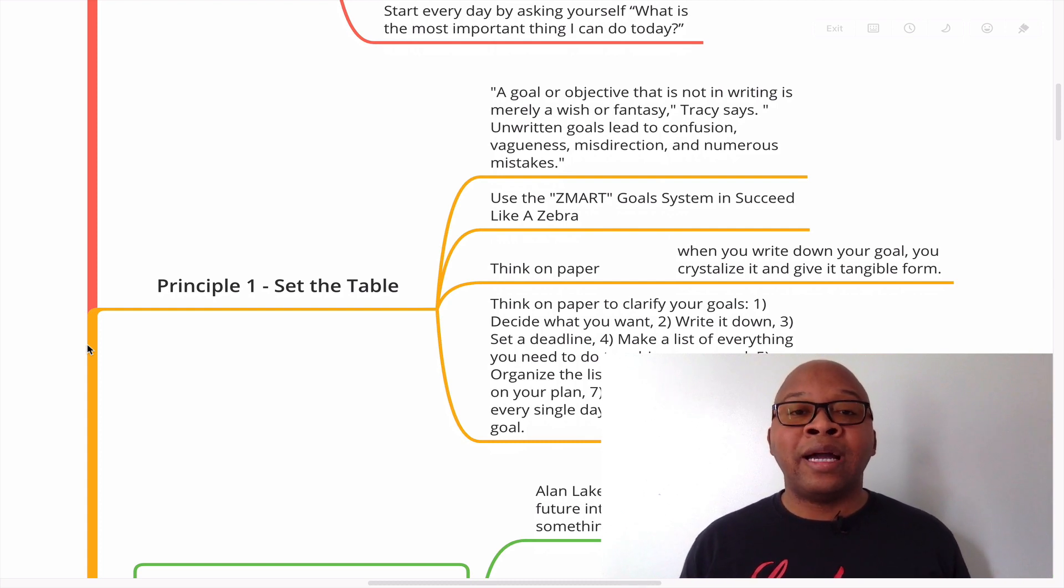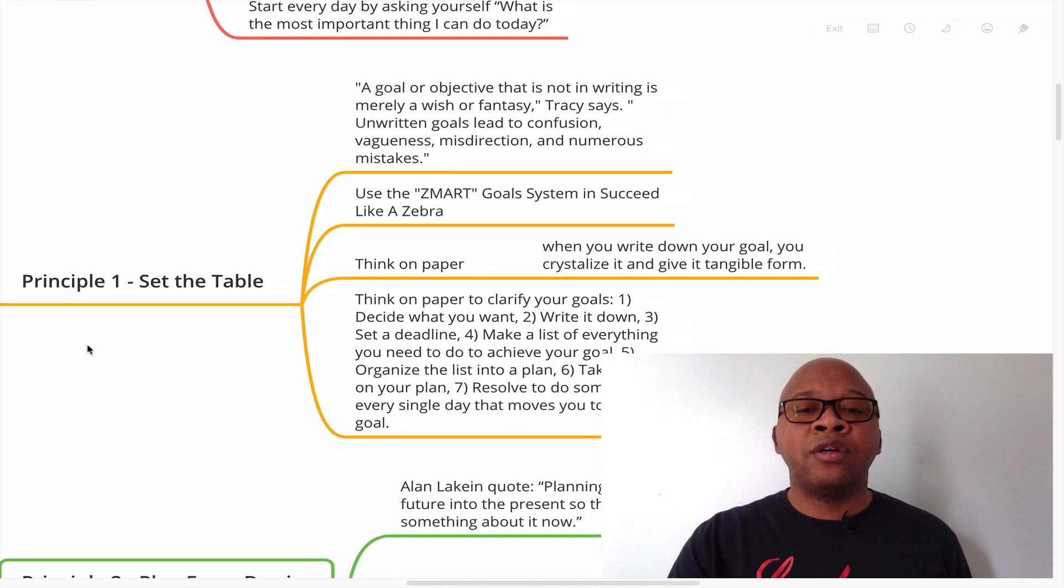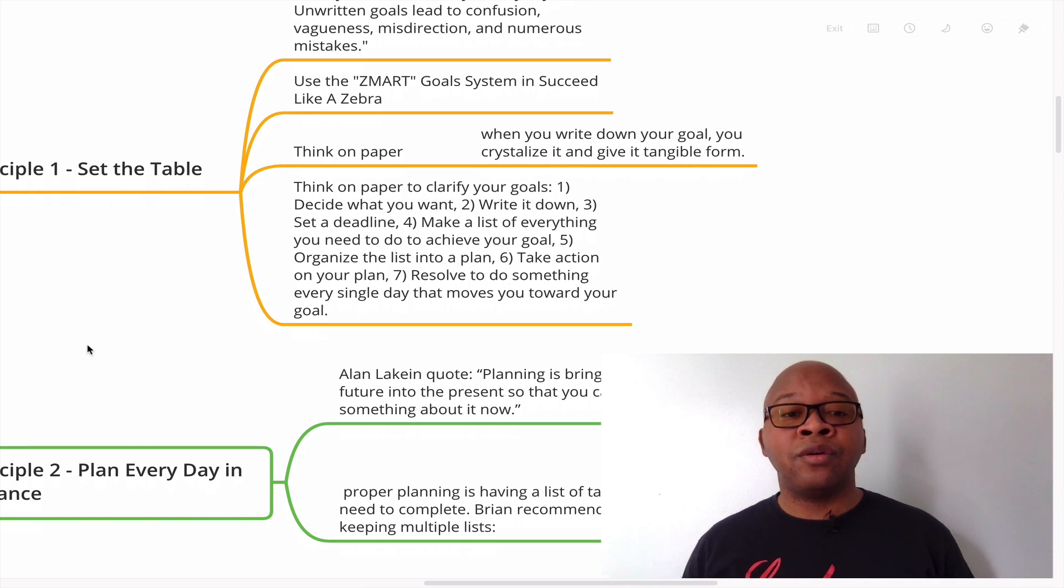Use the SMART goals system to create clear goals. In fact, in my book, I have a different variation of that. I call it the SMART goals method. You may want to check out Succeed Like a Zebra. By using the SMART goals method system, it will help you to clarify your goals. Next is to think on paper. When you write down your goal, you crystallize it and give it tangible form. Think on paper to clarify your goals.